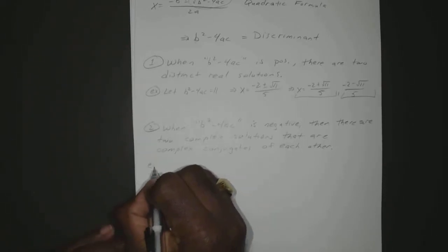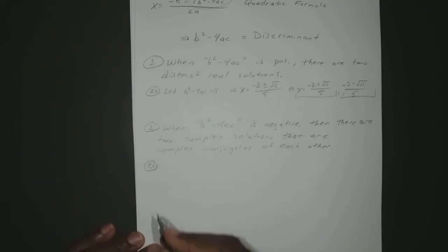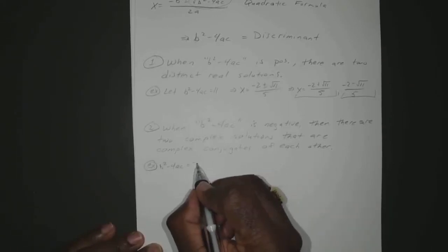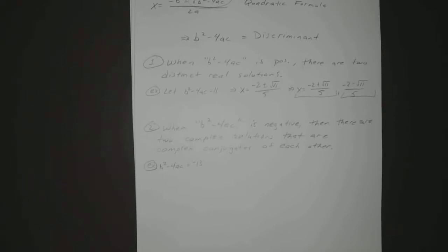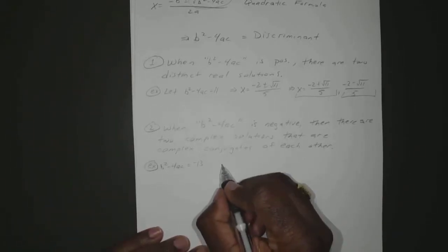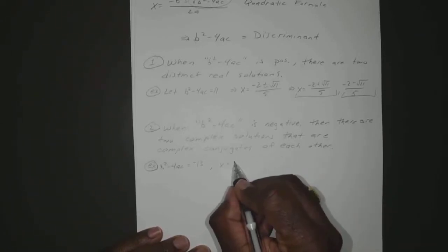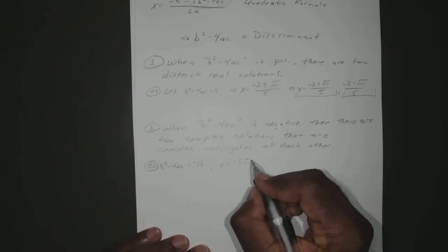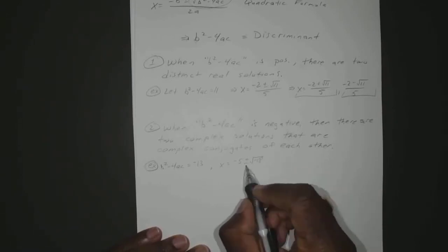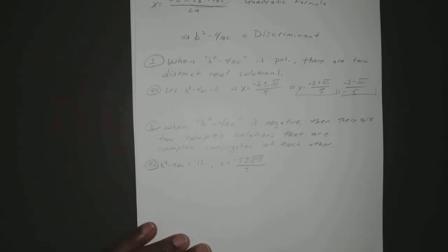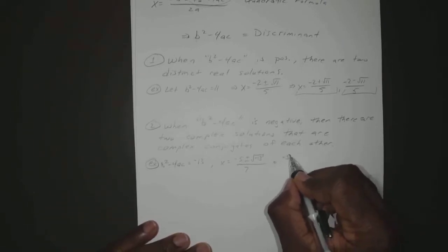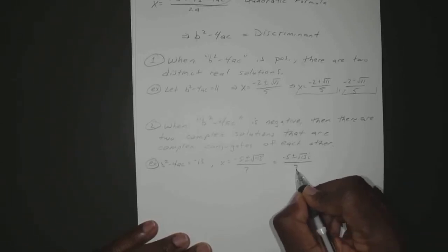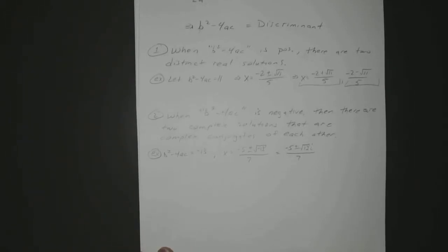So let's say for example if we plug in all our numbers and our B squared minus 4AC equals negative 13 — just some negative number — that means X is going to equal negative B. We'll make that negative 5, plus or minus the square root of negative 13, all over 7. So that would equal negative 5 plus or minus the square root of 13i, all over 7.